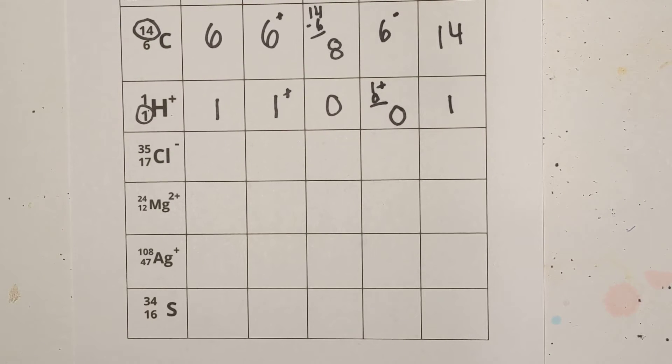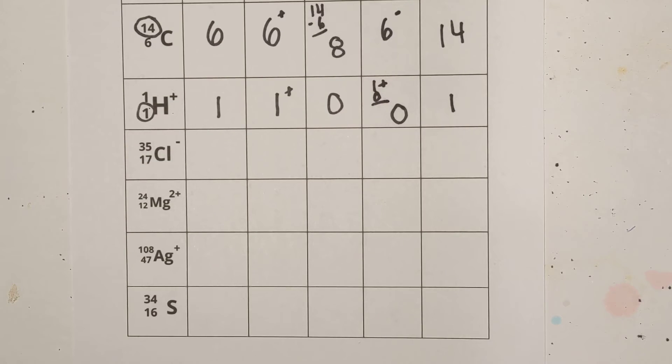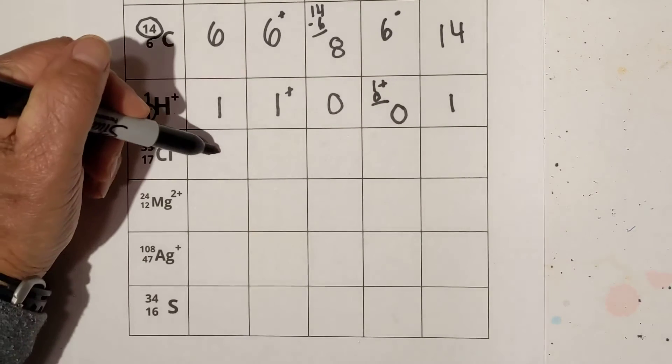That's kind of a weird ion there. Okay, now let's look at the next. Okay, let's go ahead and get started. We have the atomic number of 17.